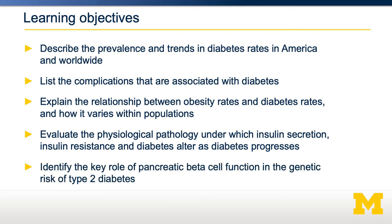Finally, we'll talk about the key role of the pancreatic beta cell in understanding the genetic risk of type 2 diabetes.